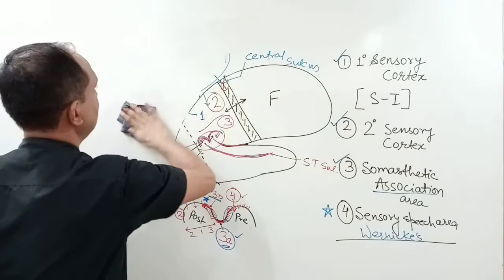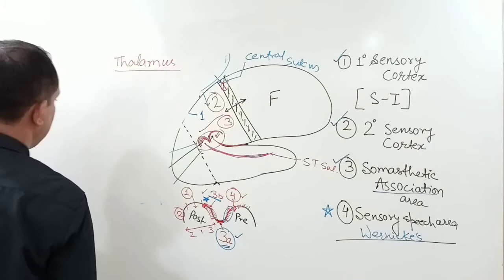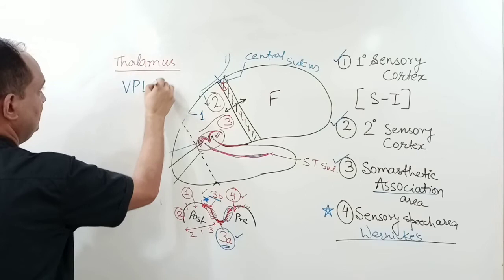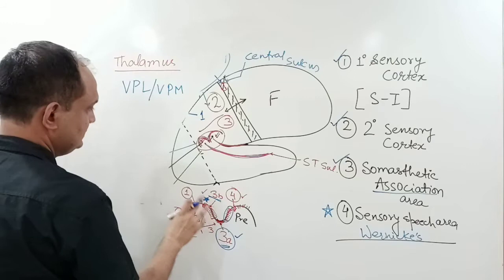Regarding the fibers and functions of the primary sensory cortex: this area receives its main input from the thalamus via thalamocortical fibers, which originate from the ventroposterolateral (VPL) and ventroposteromedial (VPM) nuclei of the thalamus.